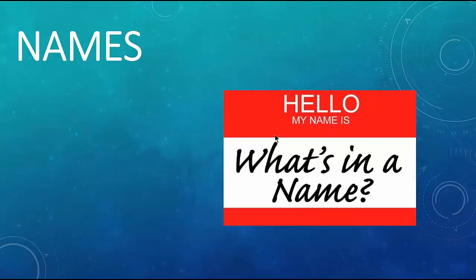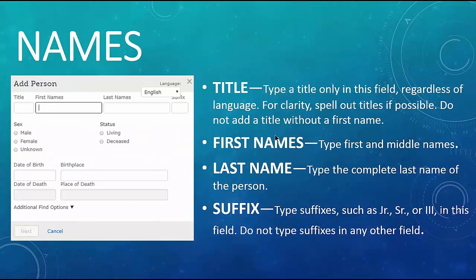The first thing we're going to talk about is names. If I bring up this screen, you can see this is adding a new person. These little boxes are called fields, and fields are important because that's what the computer uses. Most people are not born with titles. If you're royalty you might have a title, but most people aren't. The only time I use a title for somebody in a family as part of their birth name is when there are so many people in that family with the same name and one happened to be in the military.